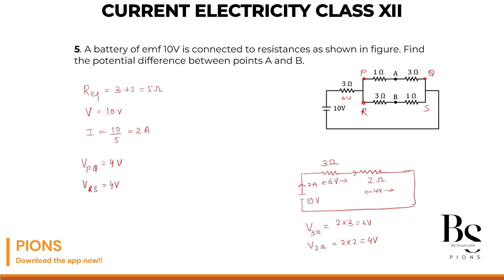2 ampere current arrives at the parallel section. The upper branch resistance is 4 ohm and the lower branch is also 4 ohm, so current splits equally: 1 ampere in the upper branch and 1 ampere in the lower branch. Since the resistors within each branch are in series, 1 ampere flows through each of them. The 1 ampere from each branch recombines to give 2 ampere returning to the battery, satisfying our condition.